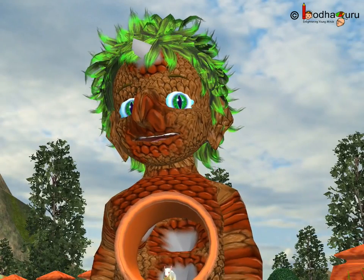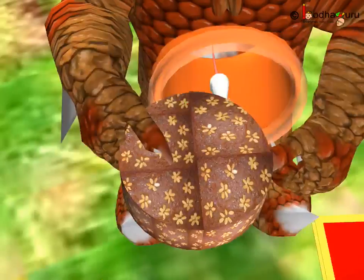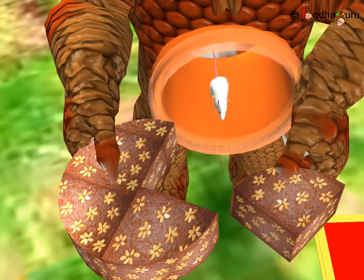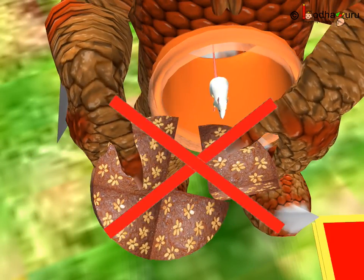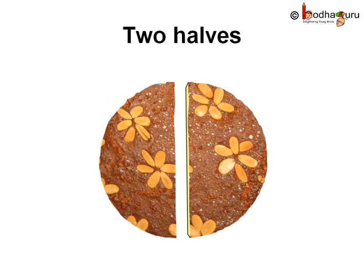As we saw in the story, did Motu cut the cake into two equal parts? No, he didn't. These are not halves. Even these are not halves. When the two parts are of equal size, then only we can call them halves.